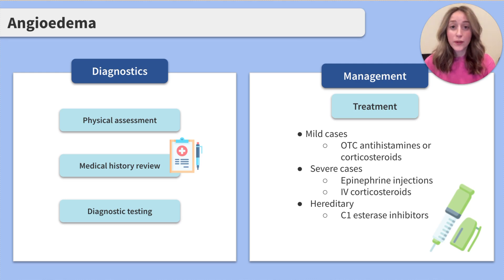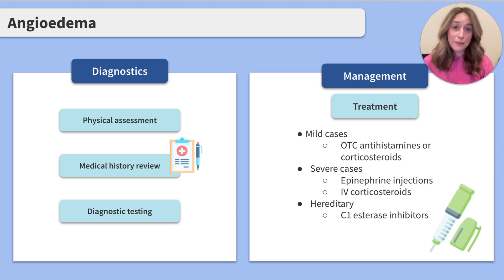Individuals with hereditary angioedema may require certain medications known as C1 esterase inhibitors to prevent and manage attacks. Management of angioedema includes identifying and avoiding triggers, as well as carrying emergency medication in case of severe reactions.